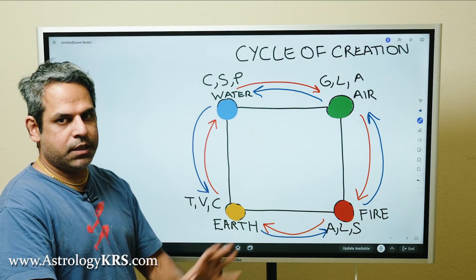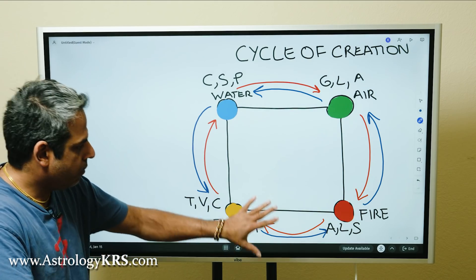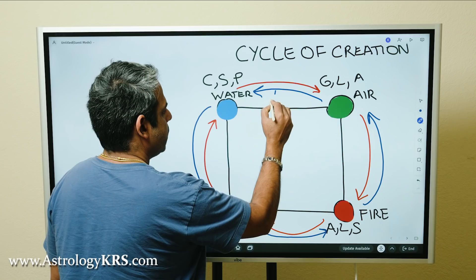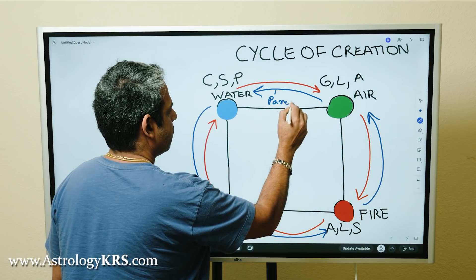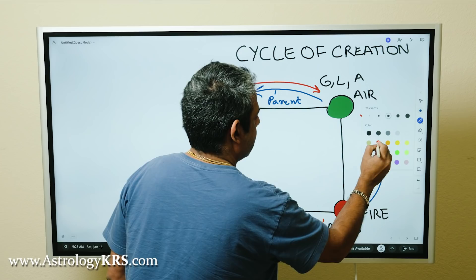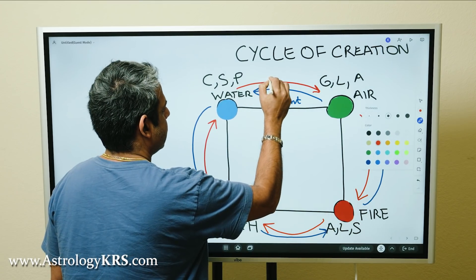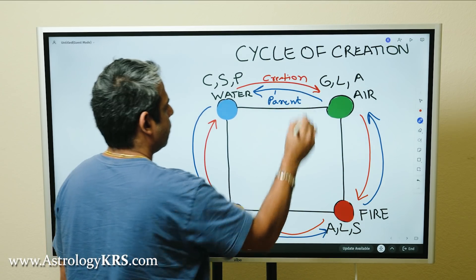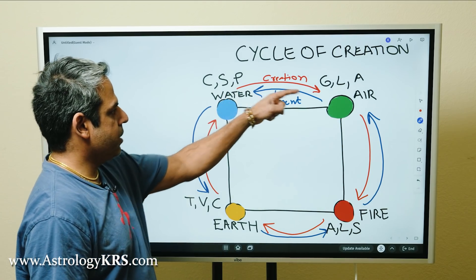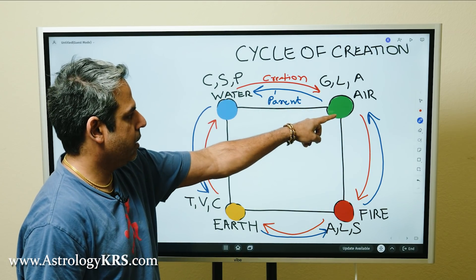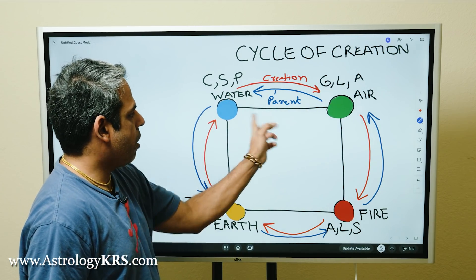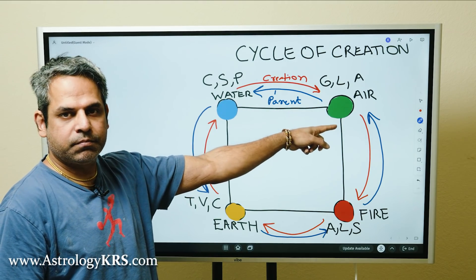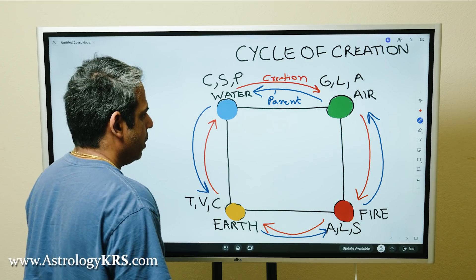The blue arrow is the parent and red is the creation. So the red is showing that water is creating air, but water is the parent of air.